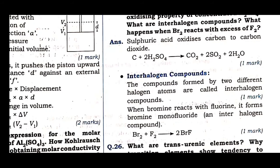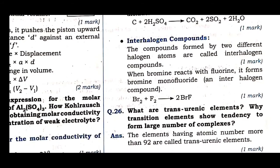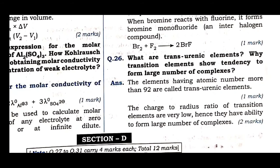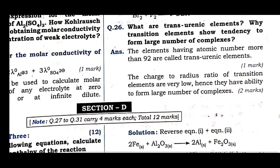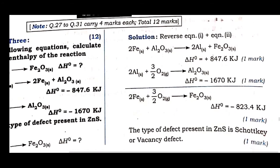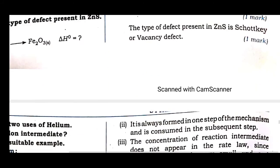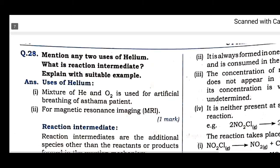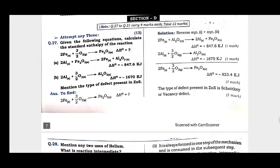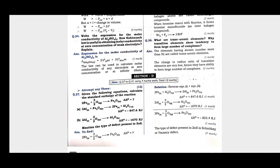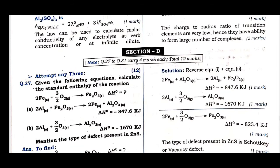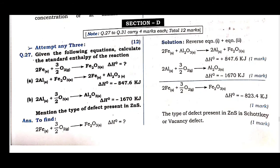The oxidizing property of concentrated H₂SO₄: carbon + H₂SO₄ → CO₂ (oxidation takes place). This is from group 16, 17, 18. Transuranic elements are those with atomic number greater than 92 (after uranium). Now Section D — the last section from question 27 to 31, each carrying 4 marks, totaling 12 marks.